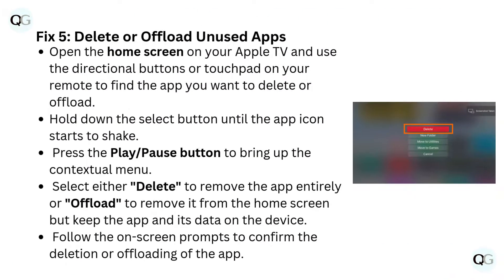Fix 5: Delete or offload unused apps. Open the home screen on your Apple TV and use the directional buttons or touchpad on your remote to find the app you want to delete or offload. Hold down the select button until the app icon starts to shake, then press the play/pause button to bring up the contextual menu. Select either delete to remove the app entirely, or offload to remove it from the home screen but keep the app and its data on the device. Follow the on-screen prompts to confirm.